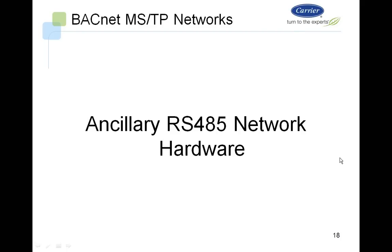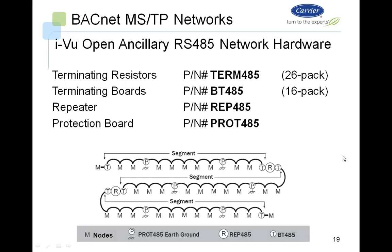Ancillary 485 network hardware includes terminating resistors — the Term 485, supplied 26 in a package — and terminating boards, supplied 16 in a package. You also have repeaters, RET 485, and surge suppression boards, the PROT 485. The terminating resistors or terminating boards go at the beginning and end of any physical segment. The repeater extends an MSTP segment, allowing you to connect two physical segments, and the protection boards protect controllers from surge.